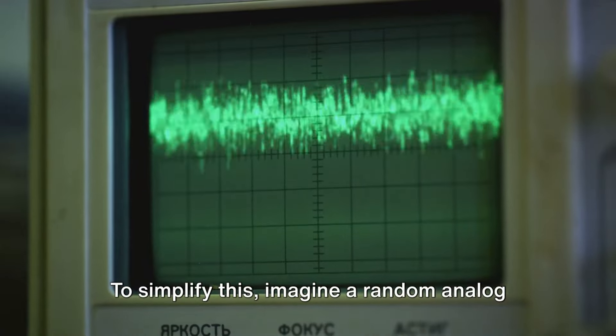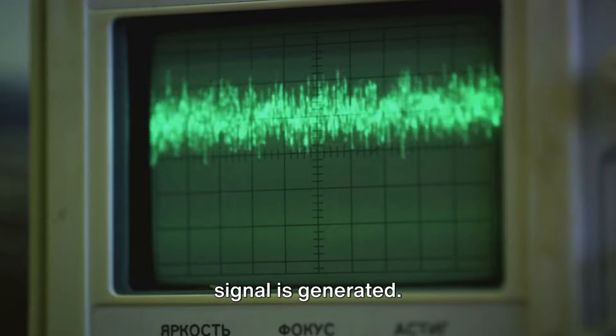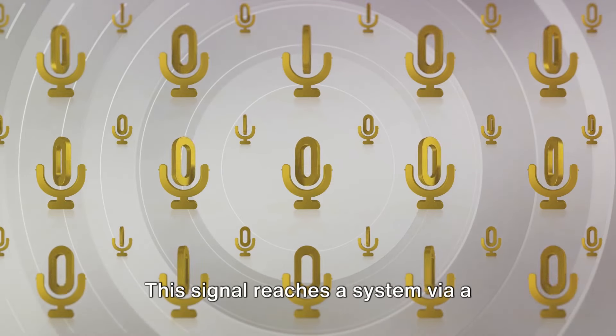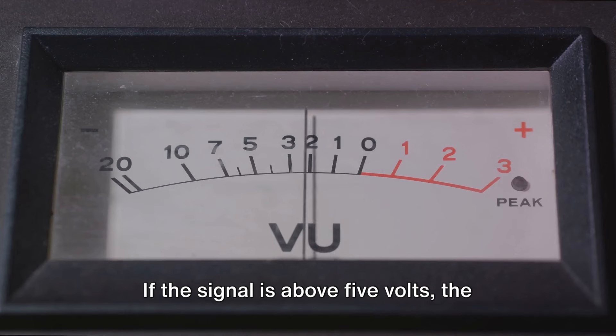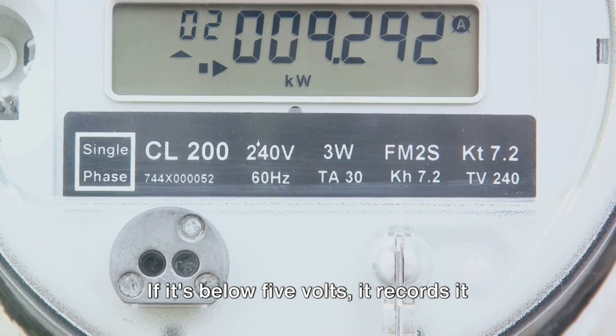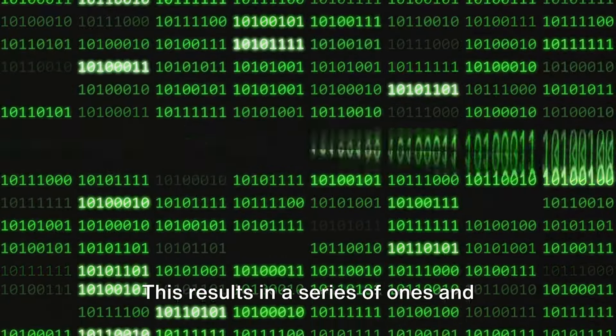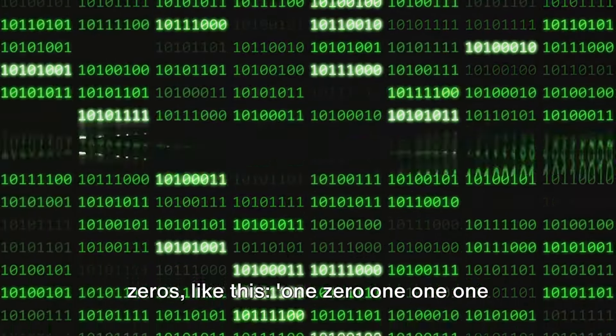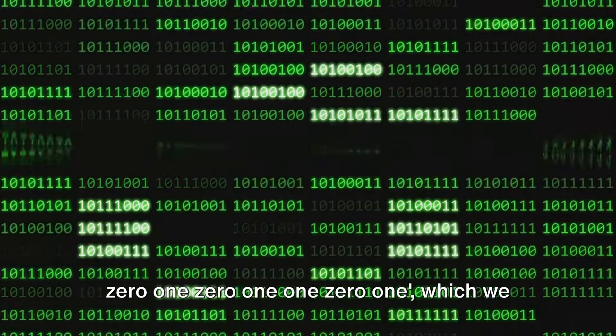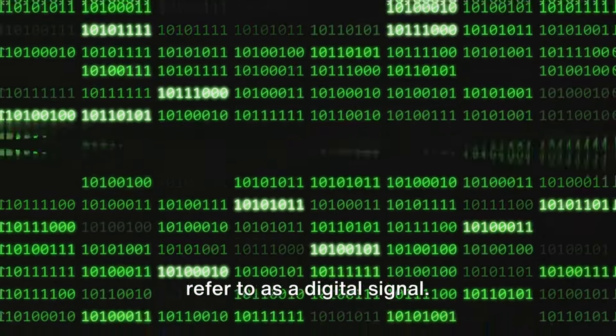To simplify this, imagine a random analog signal is generated. This signal reaches a system via a microphone or another receiver. If the signal is above 5 volts, the system records it as 1. If it's below 5 volts, it records it as 0. This results in a series of 1s and 0s like this: 101110101101, which we refer to as a digital signal.